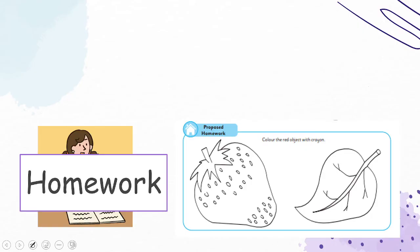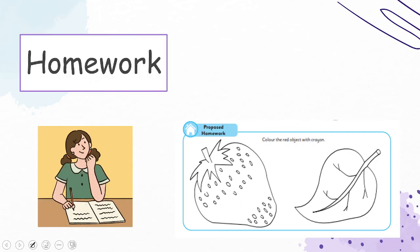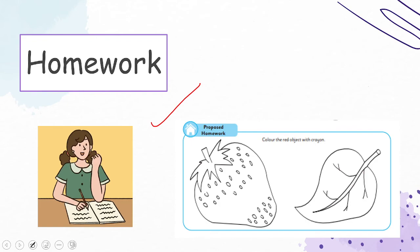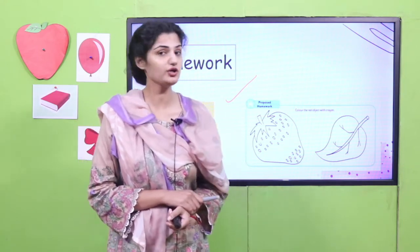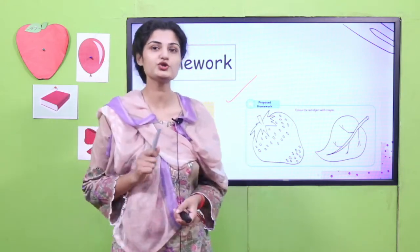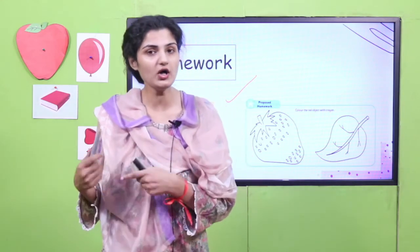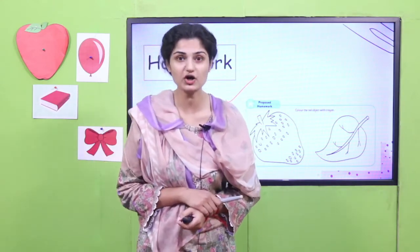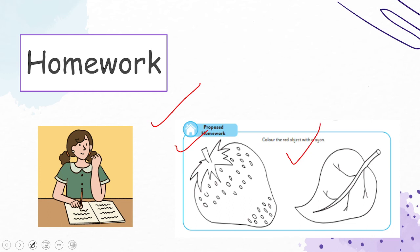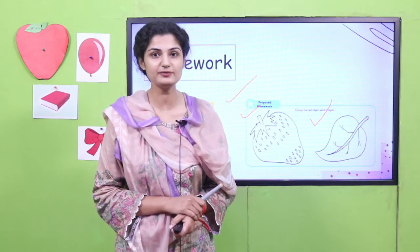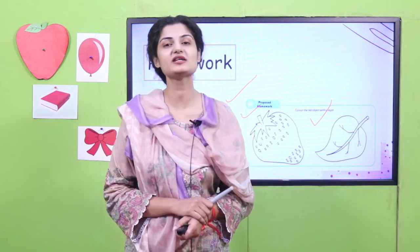Now it is homework time. Your homework is to pick the right red object and put paint on it, or you can use a crayon as well. I'm not going to tell you which is the right red object — you are going to figure out by yourself. Recall all the things I told you about red objects and figure out whether the strawberry is of red color or the leaves are. You can take help from your mother as well. With that, our lesson has come to an end. I will see you soon in the next lesson. Thank you. Allah Hafiz.